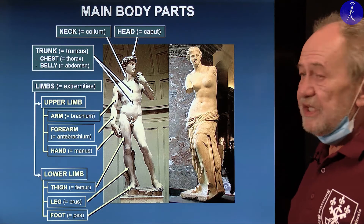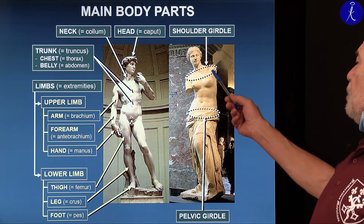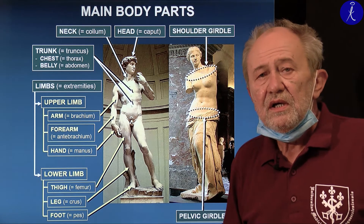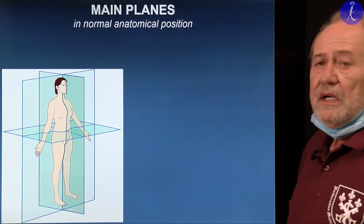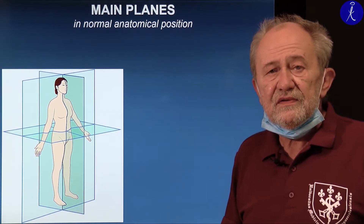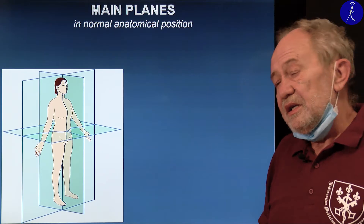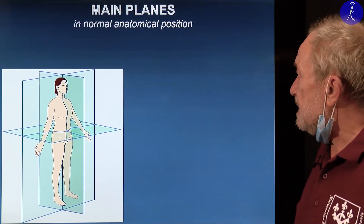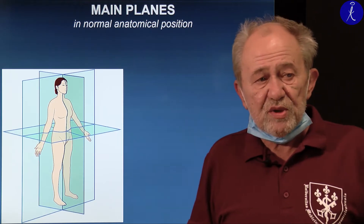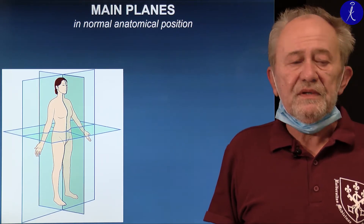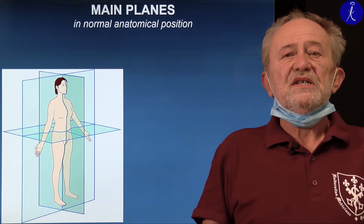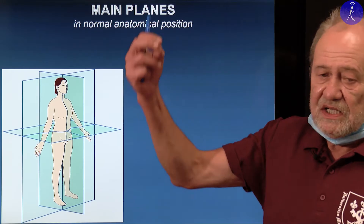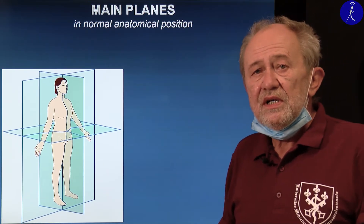To keep the limbs in contact with the trunk, girdles are needed. The shoulder girdle holds the upper limb attached to the trunk, and the pelvic girdle joins the lower limb with the trunk. Anatomy is descriptive knowledge, so agreements had to be made to describe positions within the body. Main planes divide the body and should be perceived in normal anatomical position — when the head is up, palms facing anteriorly, and the two feet parallel to each other.